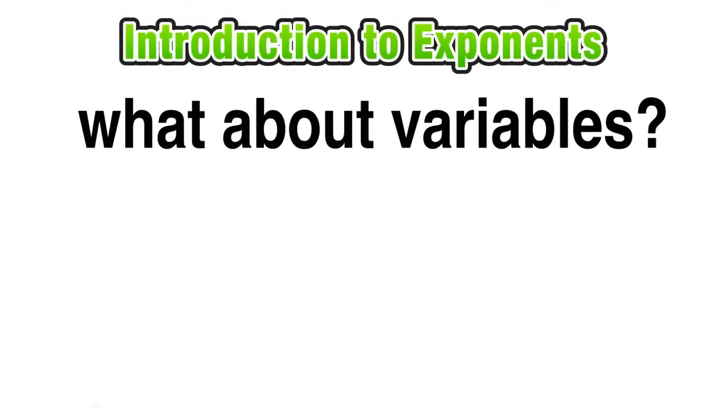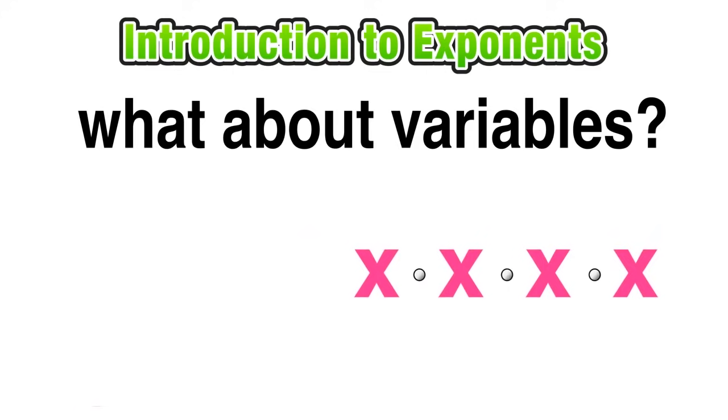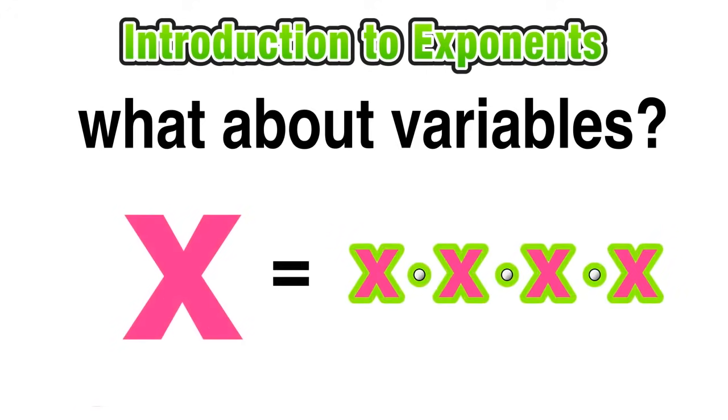For those of you currently studying algebra, you're probably thinking, what about variables? What if we add something like x times x times x times x? Using our understanding of how exponents work, we can conclude that this would be equivalent to x raised to the power of 4, or x to the 4th power, since there are 4 x's being multiplied together.